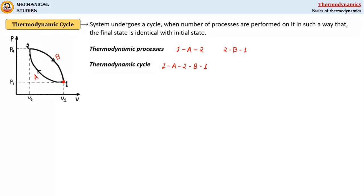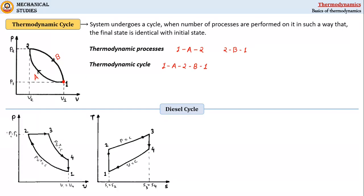These are pressure-volume and temperature-entropy plots of diesel cycle that consist of four processes. First process, 1 to 2, is isentropic compression of air.